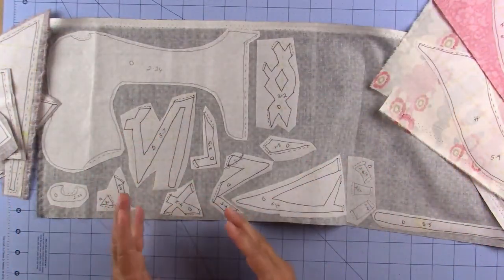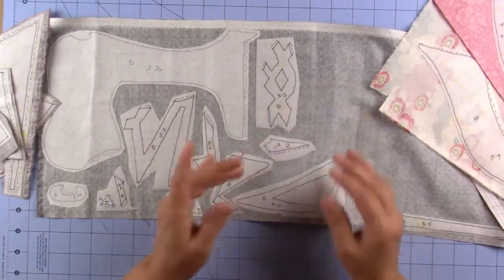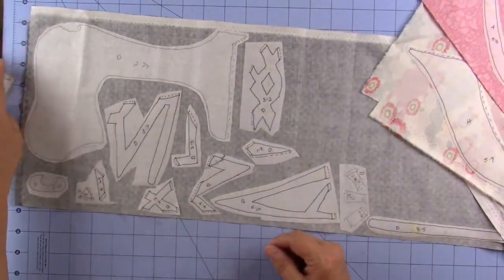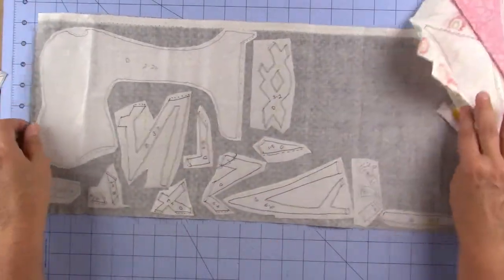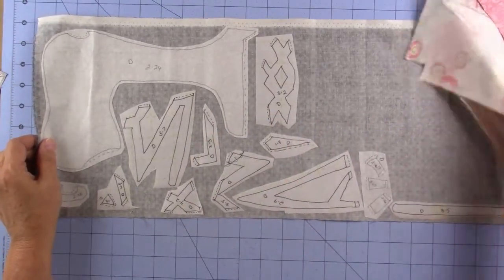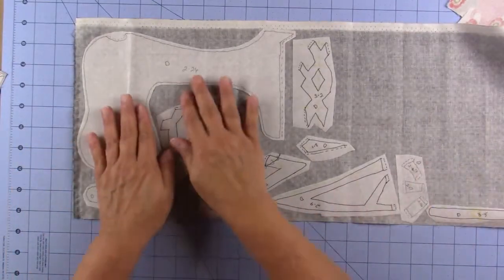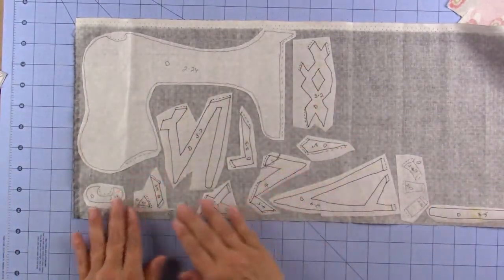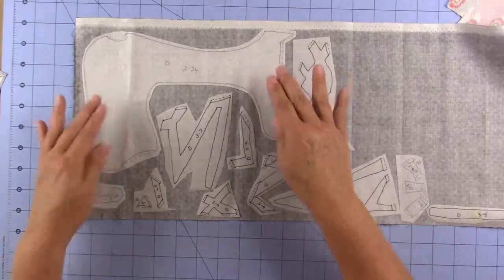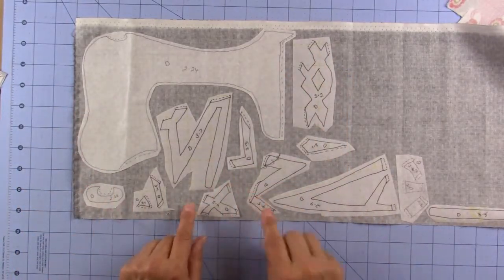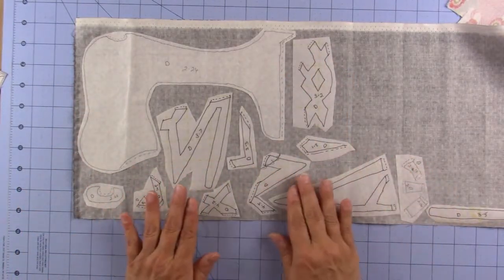Once you cut them all out and you separate them per fabric number or letter, you're going to place them on your fabric. This is fabric D. You try to be as conservative as you can and put the big pieces first and then put the smaller pieces where you can and just arrange it as much as you can.